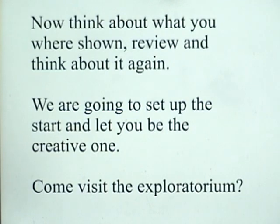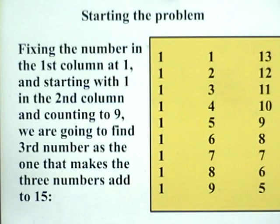Come and visit the Exploratorium to get more personal lessons. Put nine ones in the first column. In the second column, count the numbers from one to nine. In the third column, we put a number such that that number plus the other two numbers is fifteen.